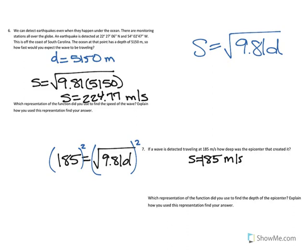We're going to end up with 34,225 equals 9.81D. Our next step would be to divide by that 9.81. And when we divide that by 9.81...